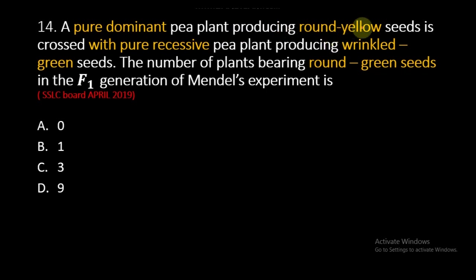A pure dominant pea plant producing round yellow seeds — round and yellow pure — is represented as capital R capital R capital Y capital Y.